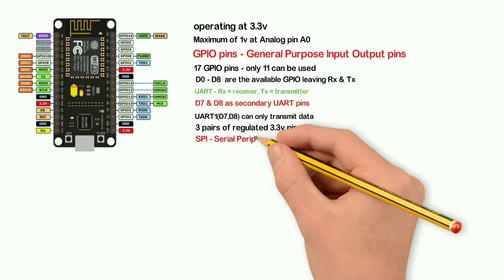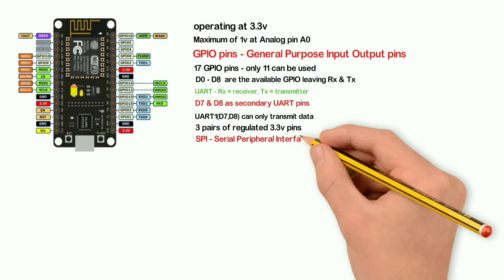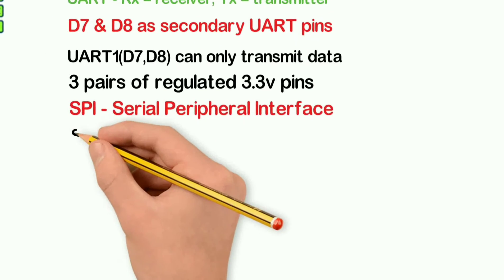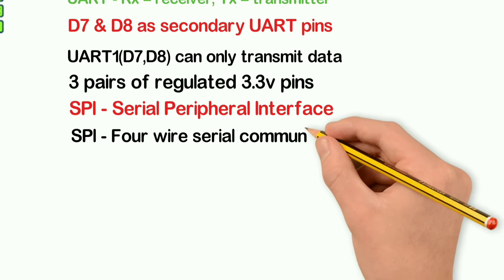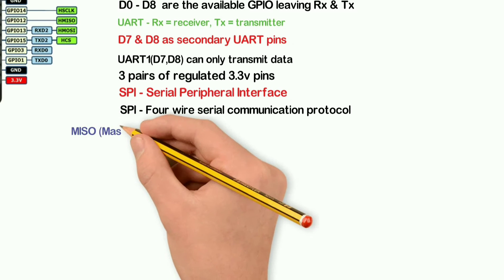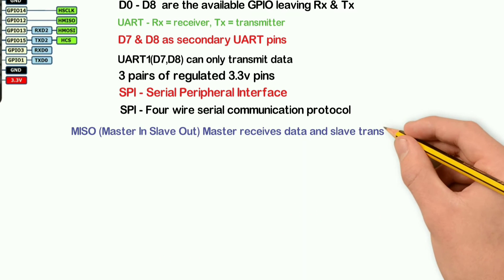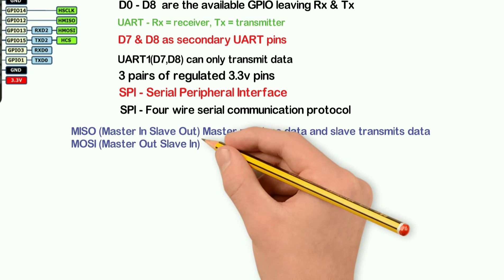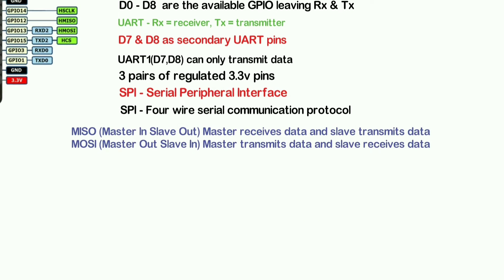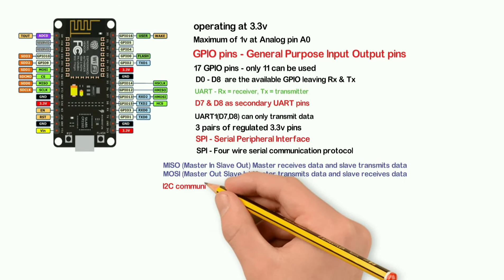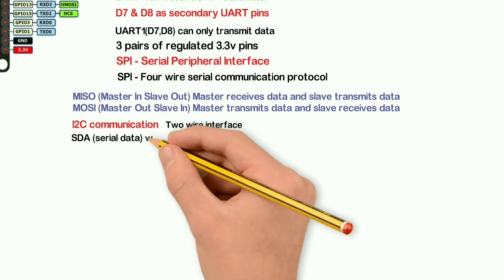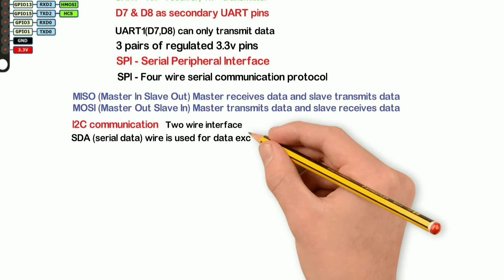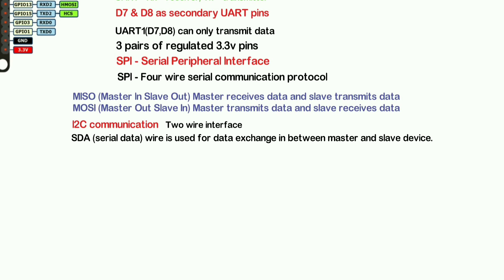The secondary UART port operates at 3.3V. The board also supports SPI — Serial Peripheral Interface — which uses master-slave concepts including MOSI and MISO. Additionally, it supports I2C communication.